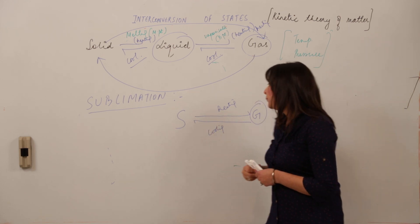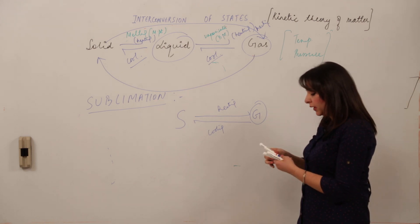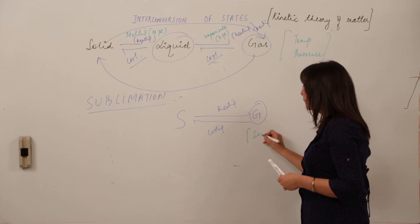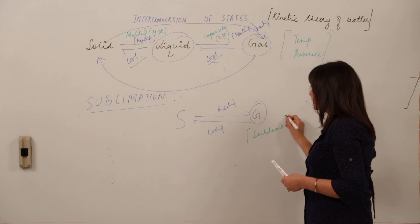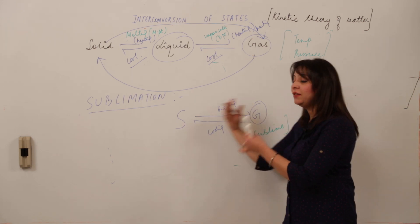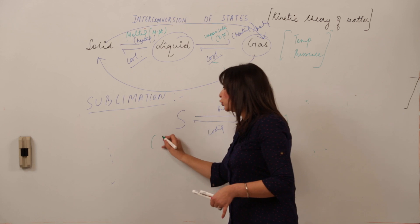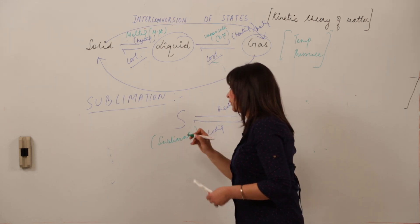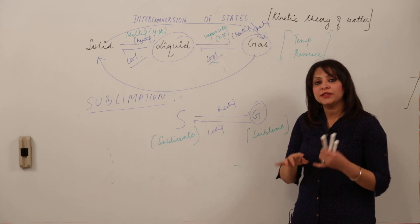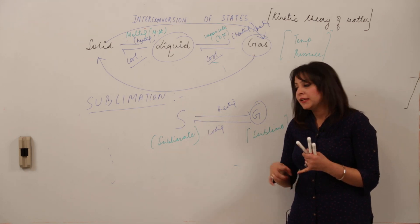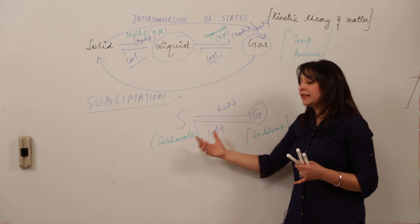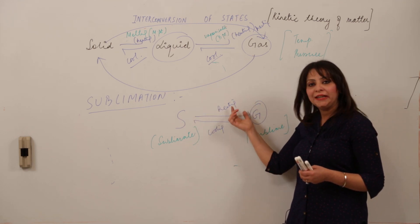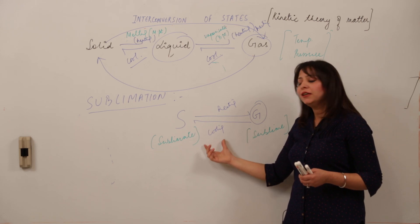In sublimation, the gaseous state which is formed is called the sublime, and when on cooling it again forms the solid state, that solid state is called the sublimate. So sublimation consists of sublime and sublimate: sublime is the gaseous state, sublimate is the solid state. Solid to gas by heating, gas to solid by cooling.